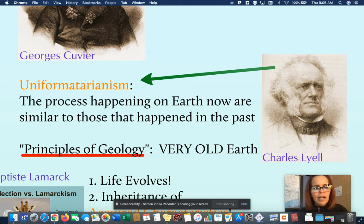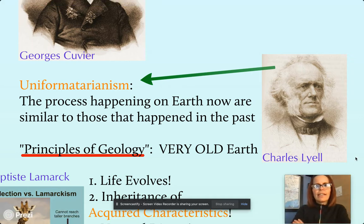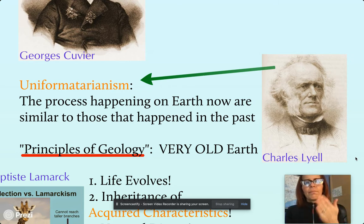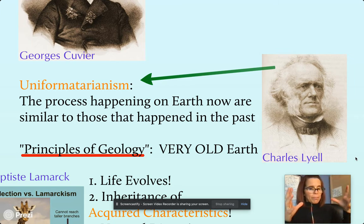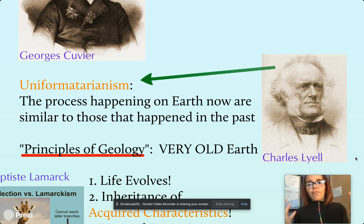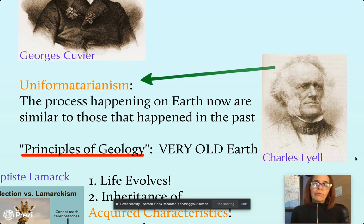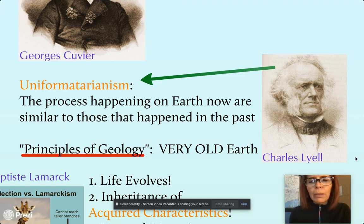Then we have Lyell, who comes up with the idea of uniformitarianism — that things happening on Earth now have always been happening. So if we see something occurring on this planet, we can assume the same forces were occurring long ago. He's studying geology especially. He says: I can see rivers cutting paths in our land, so we can assume rivers have always been cutting paths, maybe leading to valleys that formed between mountains. He's looking at this principle of a very, very old planet, and that things happening long ago are still happening today.